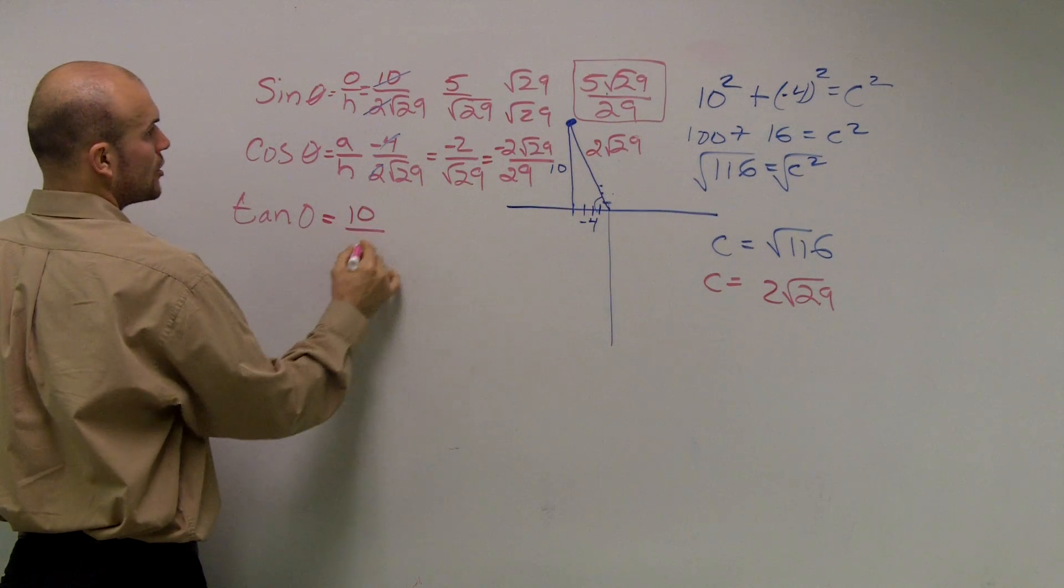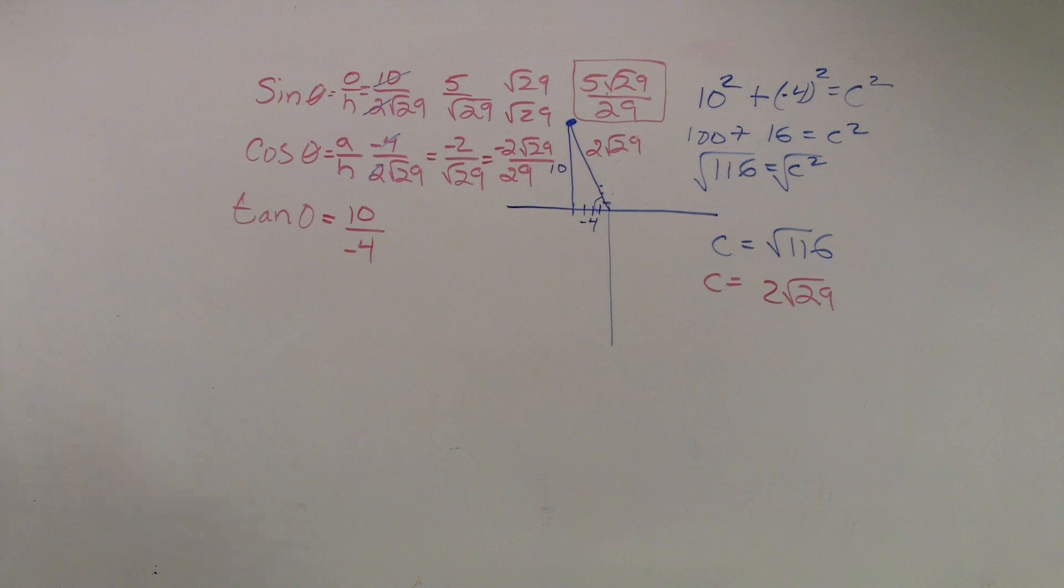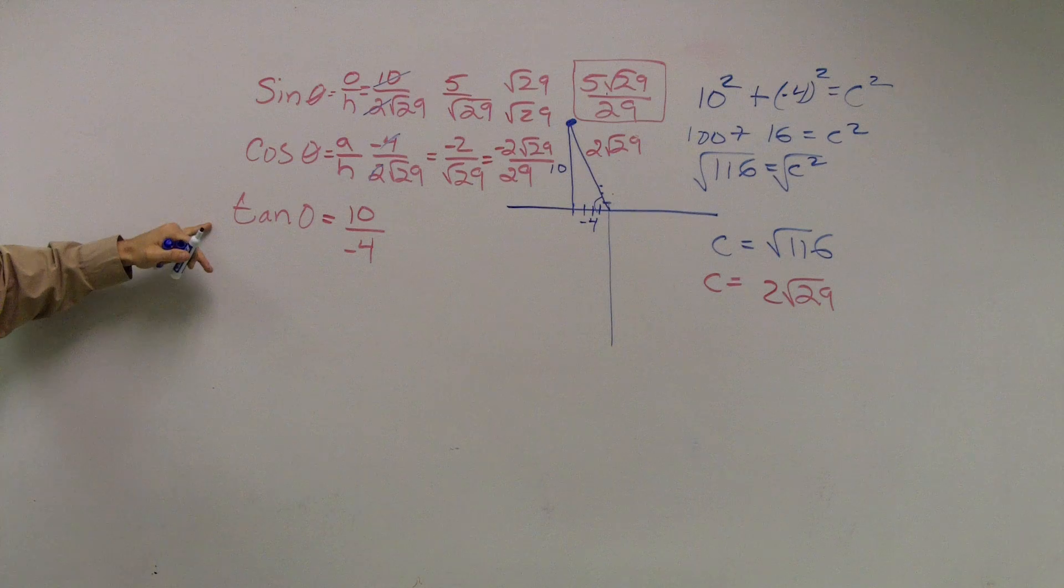Tangent, opposite over adjacent, 10 over negative 4. So now the next thing, guys, we have sine, cosine, and tangent. Remember, if I'm going to use now the reciprocal properties of these,